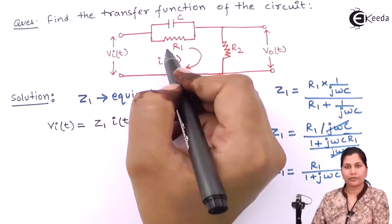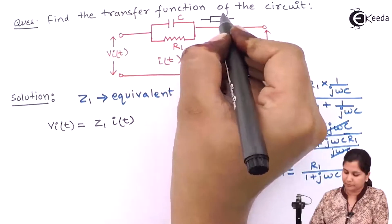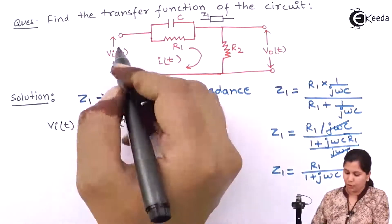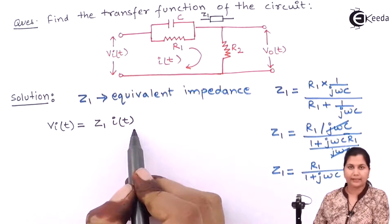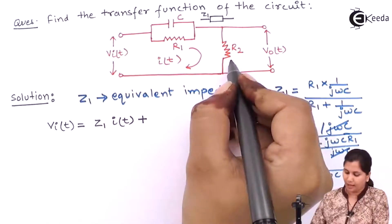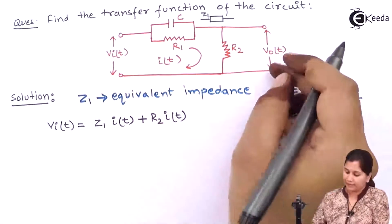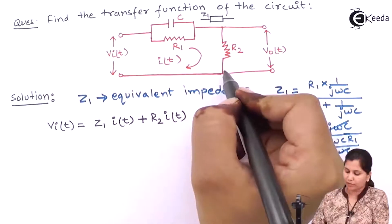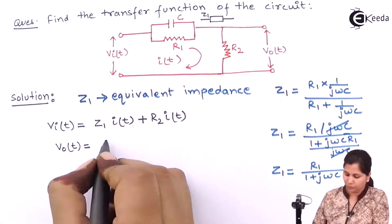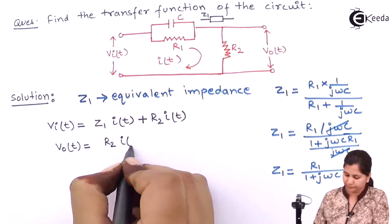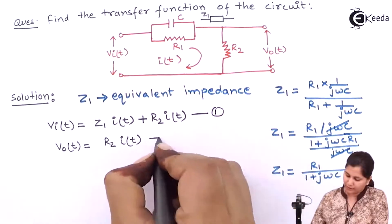This parallel combination can be replaced by Z1. So Vi(t) will be equal to Z1 multiplied with the current i(t) plus R2 i(t). And this V0(t), it is the voltage across the resistance R2. So V0(t) will be equal to R2 i(t). So these are the two equations which we have obtained.